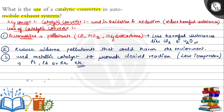So in this question, we were asked about the uses of the catalytic converter in the automobile exhaust system. We learned that it is used in oxidation and reduction reactions and helps reduce harmful substances. Automobiles burn fuel and release pollutants like carbon monoxide, which it converts to less harmful substances. It also helps reduce airborne pollutants that harm the environment, and uses metallic catalysts like platinum, palladium, or rhodium to promote desired reactions at lower temperatures.